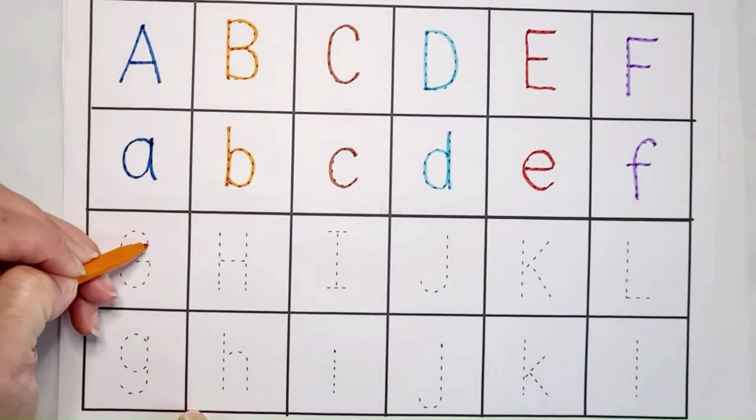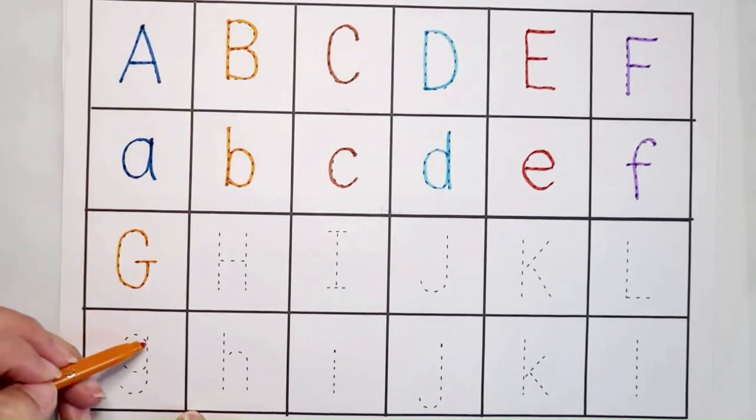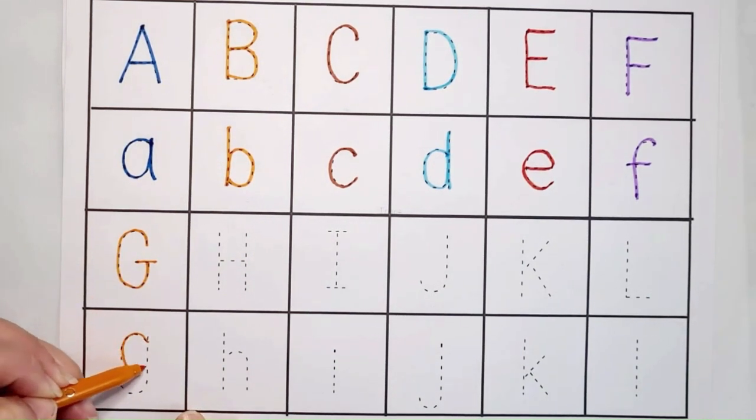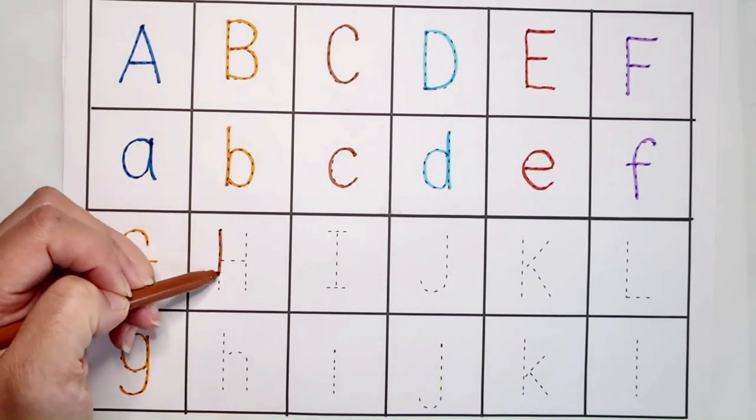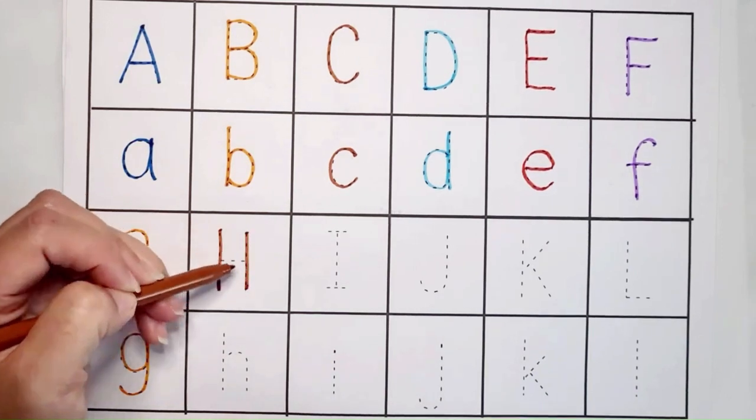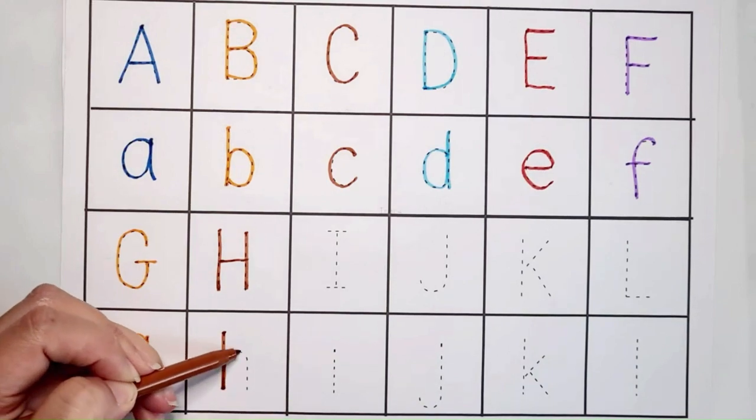G. G is for Goat, Goat G G. H. H is for House, House H.